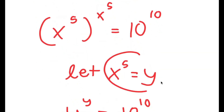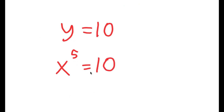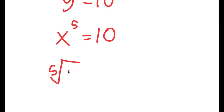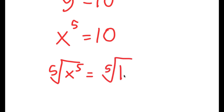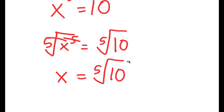Now, remember how we let x to the power of 5 equal y. So this means that x to the power of 5 is equal to 10. To solve this, I'm going to take the 5th root on both sides. The 5th root of x to the power of 5 is simply x, so I'm left with x is equal to the 5th root of 10.